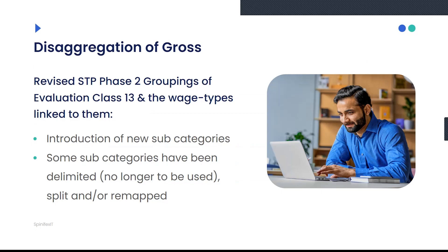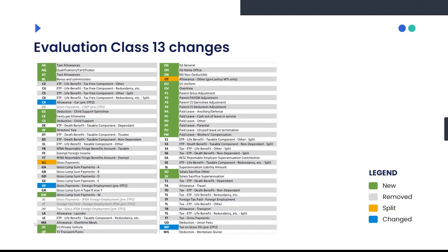The big one that we're all very familiar with is the way that gross is being dealt with, which has been revised for Single Touch Payroll Phase 2. There's been an introduction of a number of new subcategories, and many of the existing subcategories have been delimited or split out. This is a screenshot from the SAP Single Touch Payroll presentation. Evaluation class 13 that holds the wage types flagged for reporting for STP now has a number of new subcategories — many have been removed, some have been split, and others have been changed.